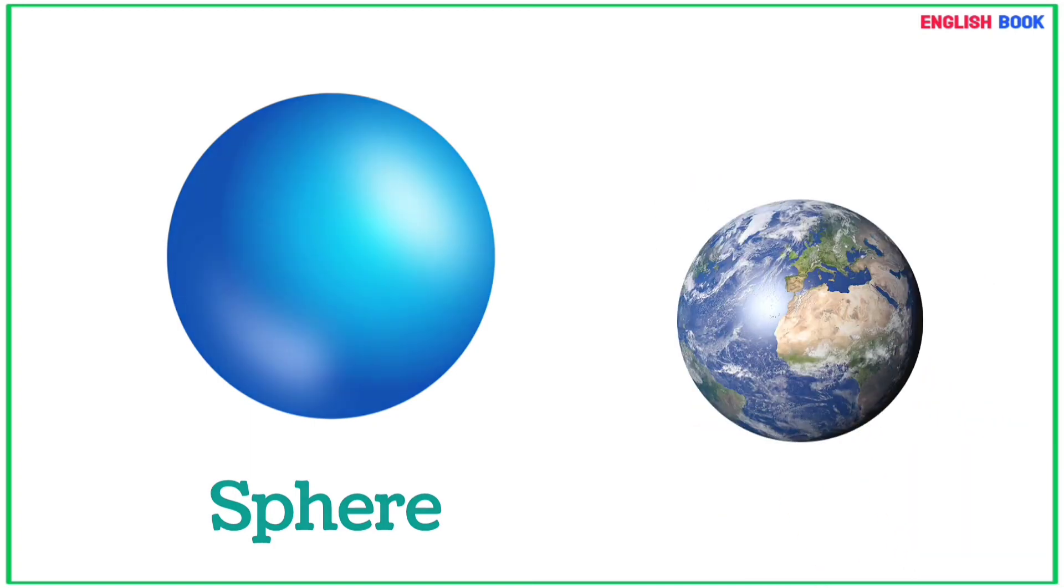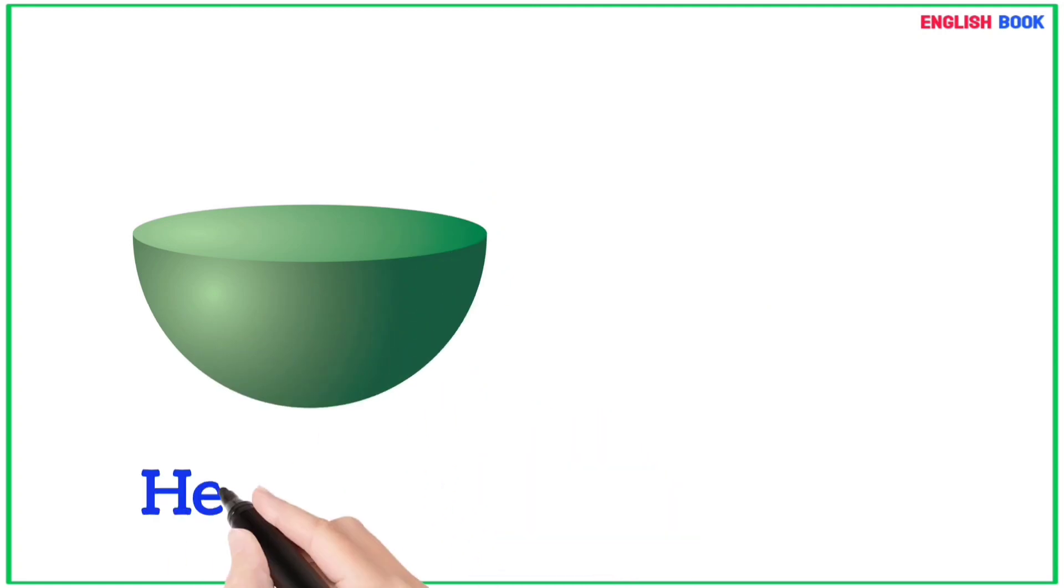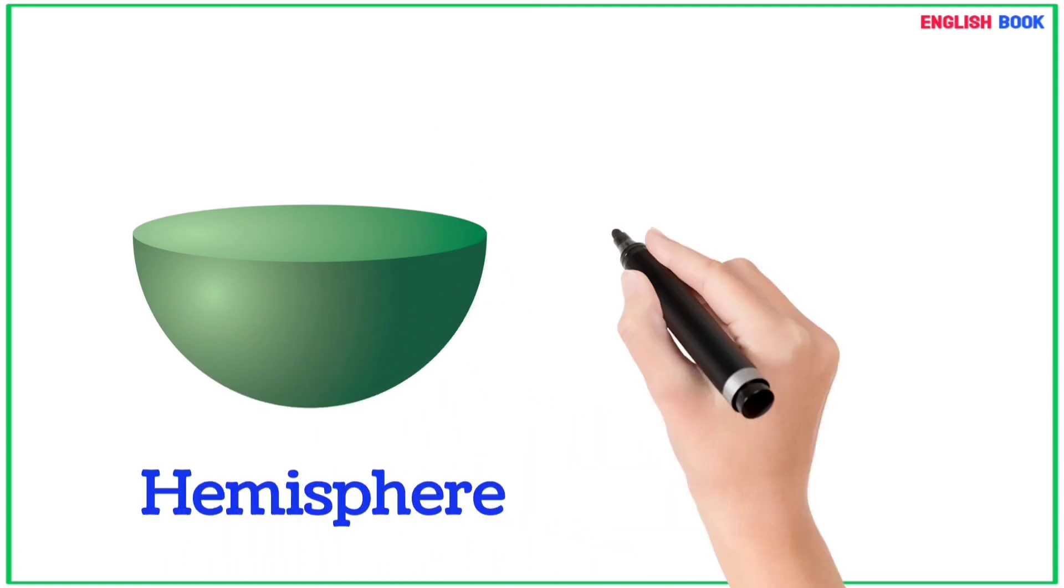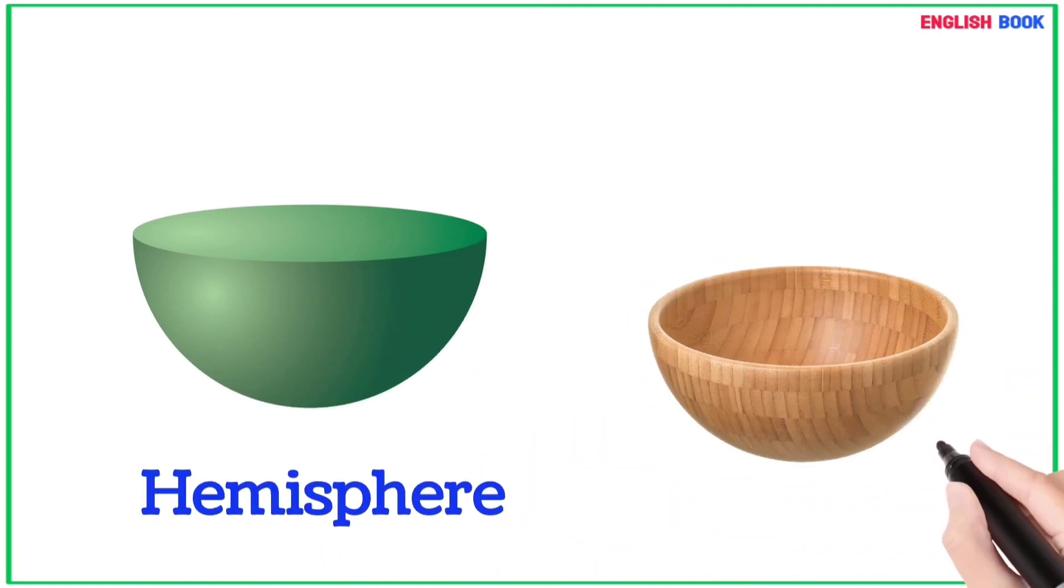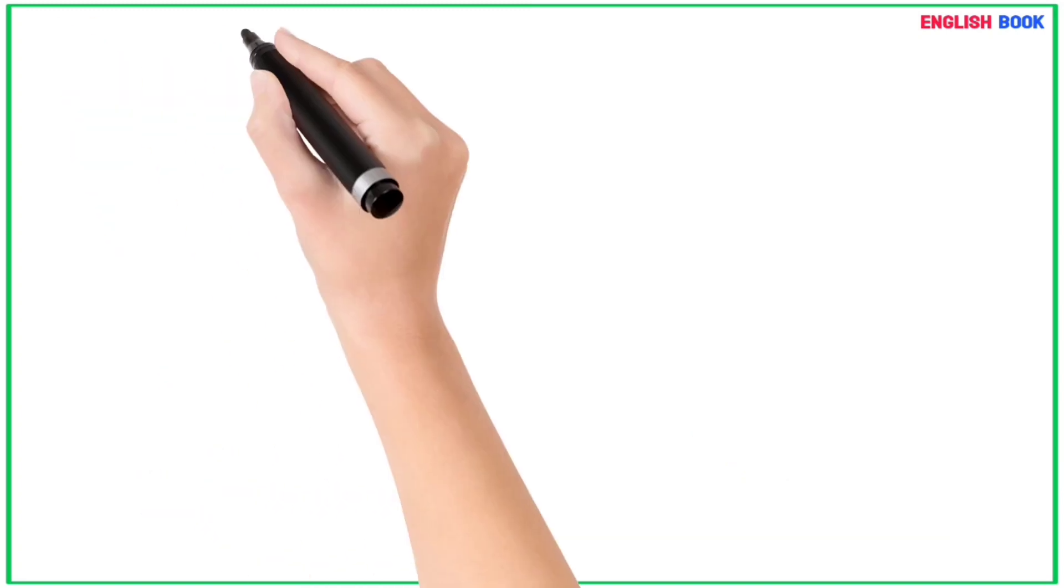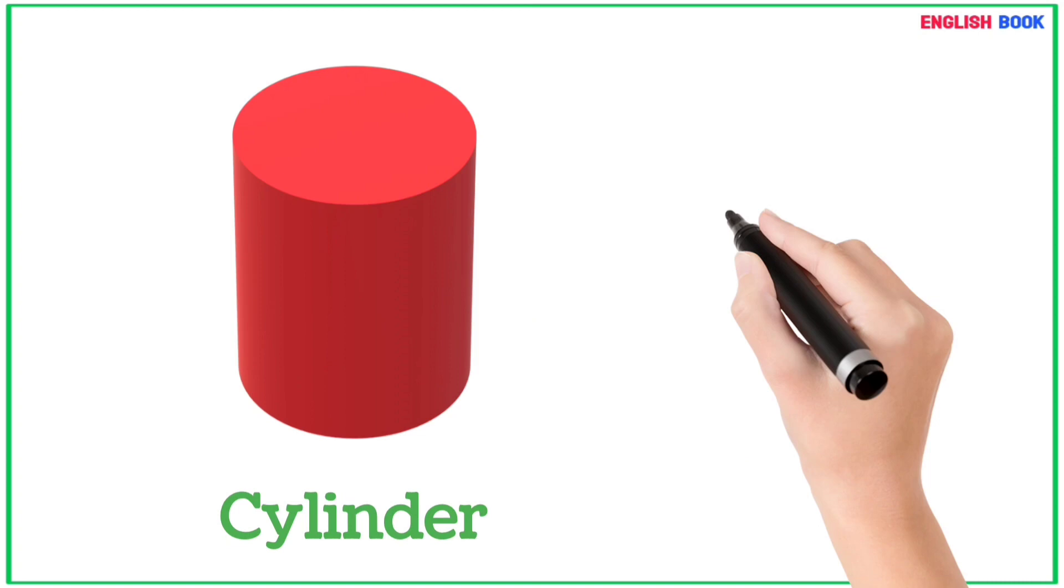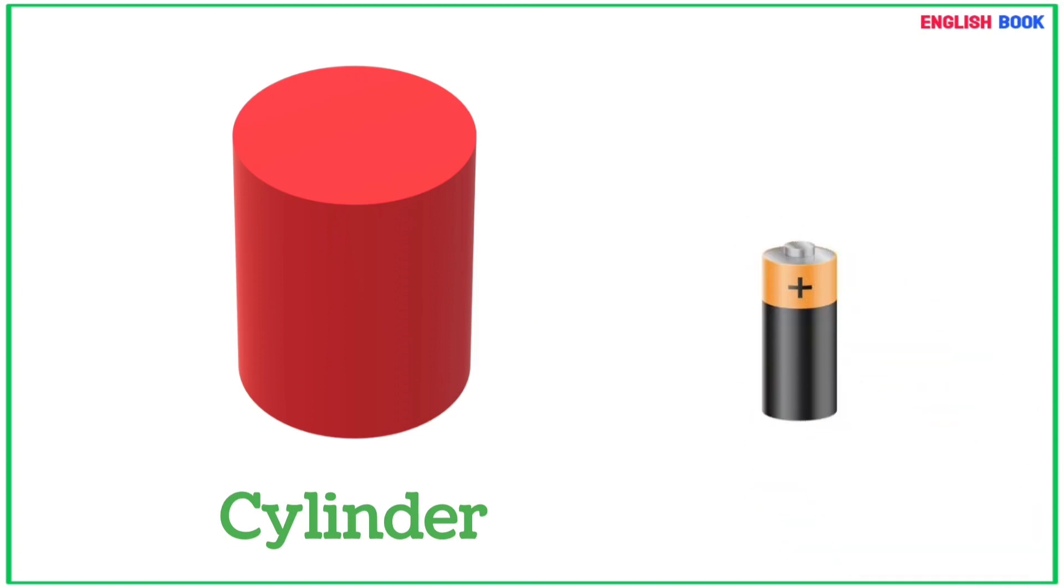Hemisphere - this bowl is a hemisphere shape object. Cylinder - this battery is a cylinder shape object.